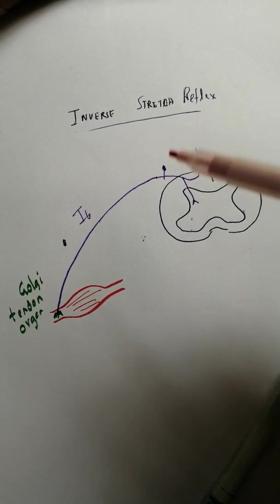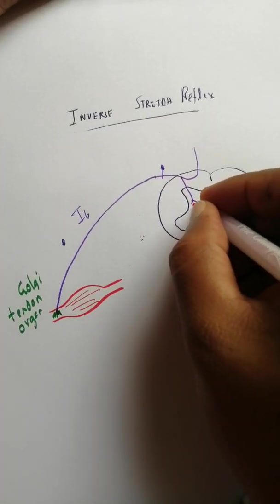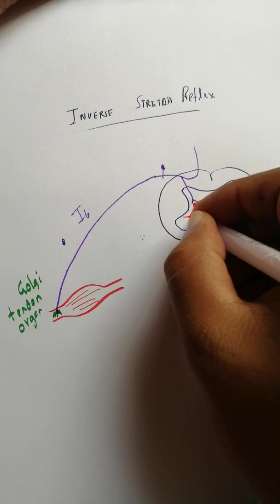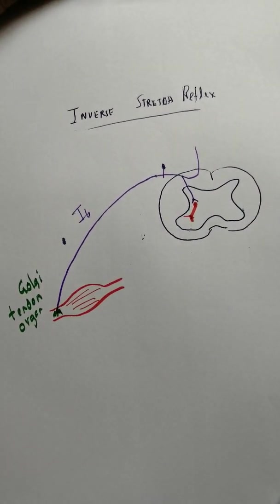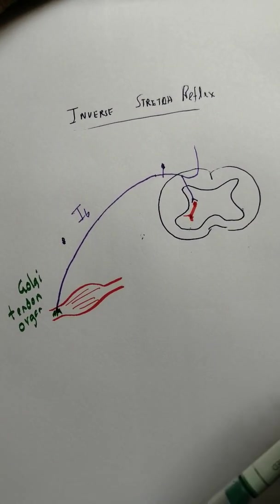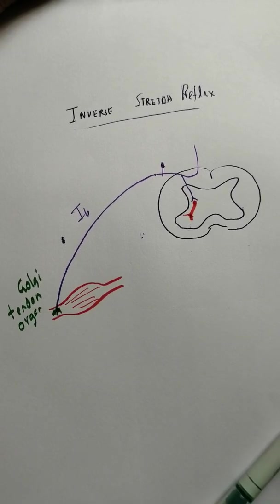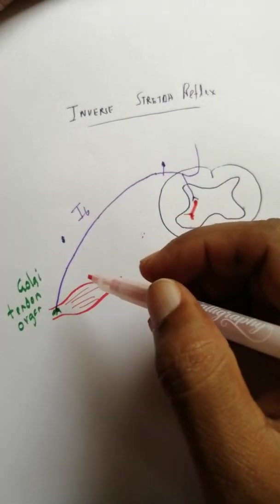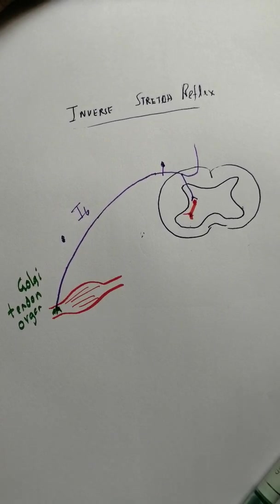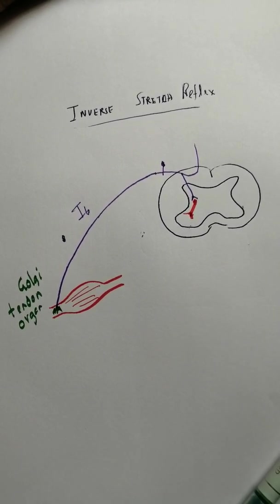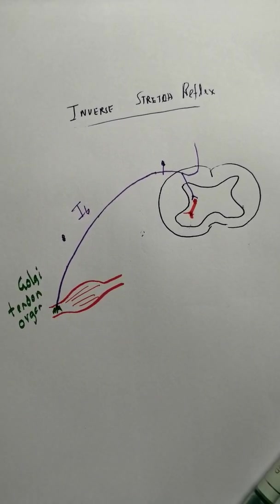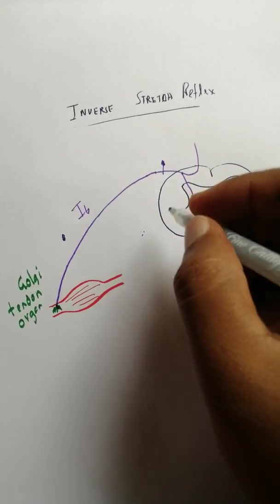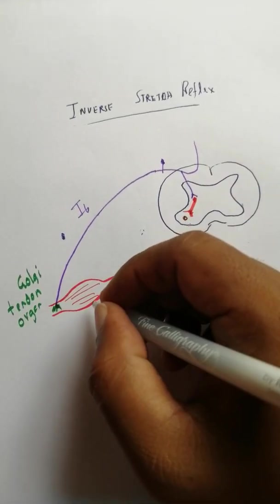Here's an inhibitory interneuron, and that inhibitory interneuron is going to supply the actual muscle. This is the lower motor neuron that supplies this muscle.